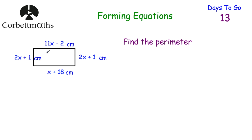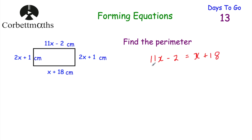Next question: we've got a rectangle and we've been asked to find the perimeter. The widths are both 2X plus 1 centimetres. The top length is 11X minus 2 centimetres and the bottom length is X plus 18 centimetres. The first step is to explain why 11X minus 2 equals X plus 18 — the opposite sides of a rectangle have the same length, so those two expressions must be equal.